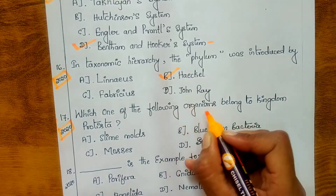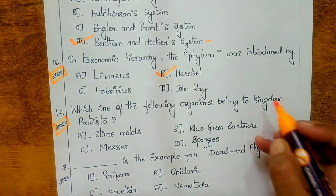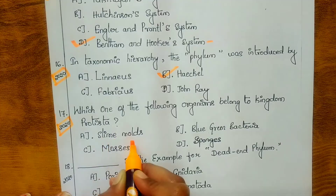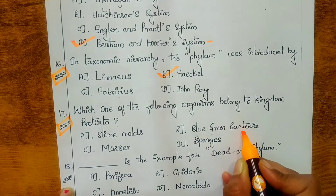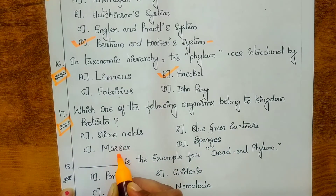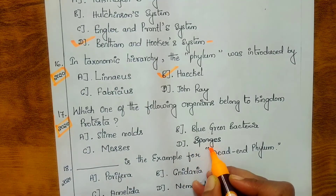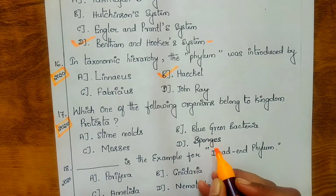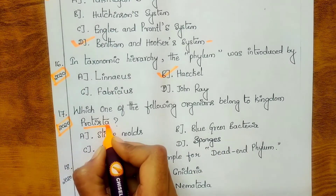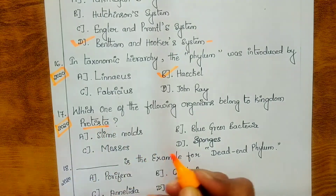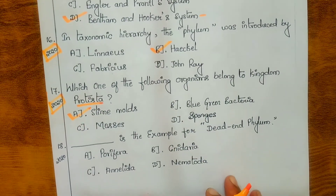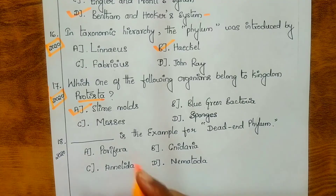Seventeenth question, from 2020: which of the following organisms belongs to kingdom Protista? Options are: A. Slime molds, B. Blue-green bacteria, C. Mosses, D. Sponges. The answer is A — slime molds belong to kingdom Protista.